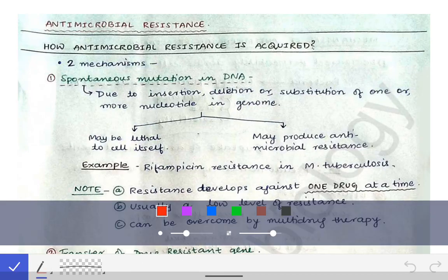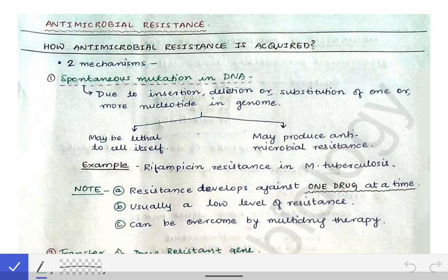We are going to learn about the very important topic of microbiology: antimicrobial resistance. We will discuss mainly two topics — how antimicrobial resistance is acquired among bacteria, and the mechanisms of antimicrobial resistance in bacteria. There are mainly two mechanisms of acquiring antimicrobial resistance.